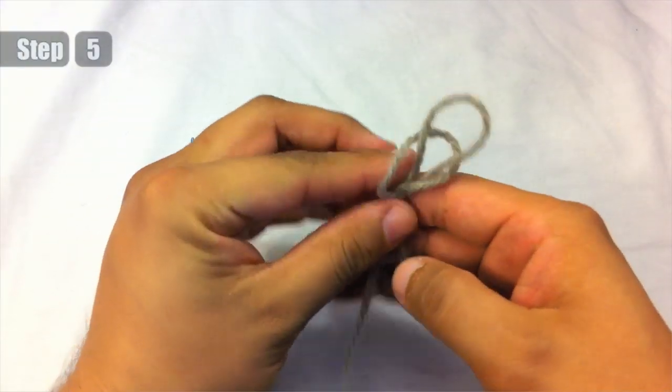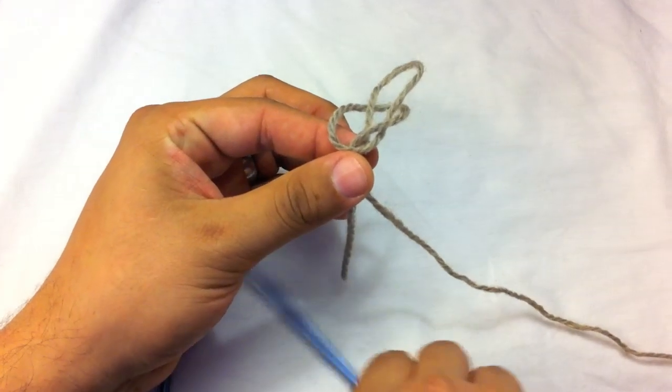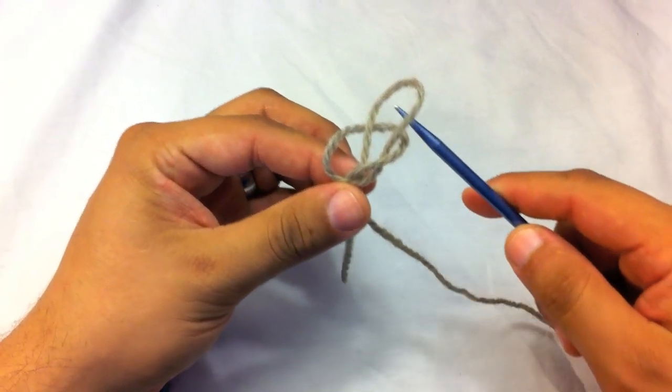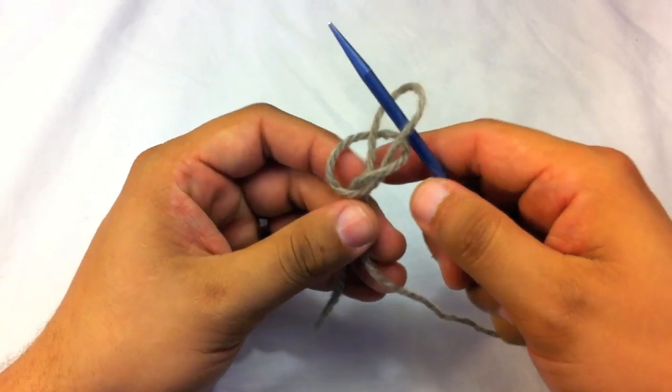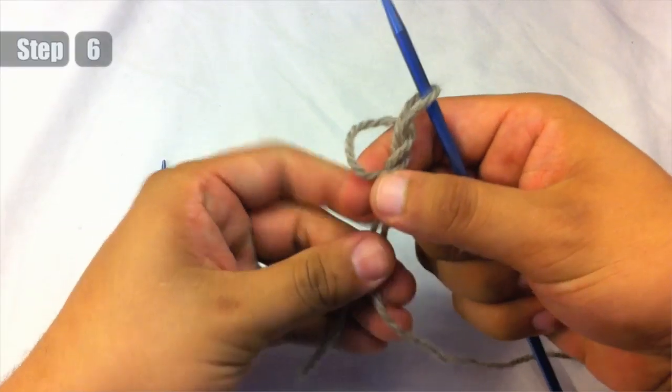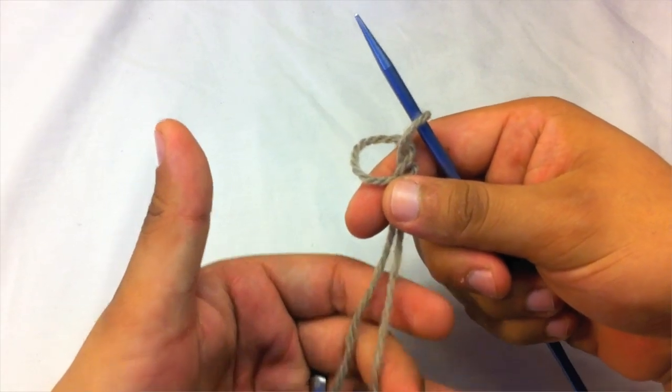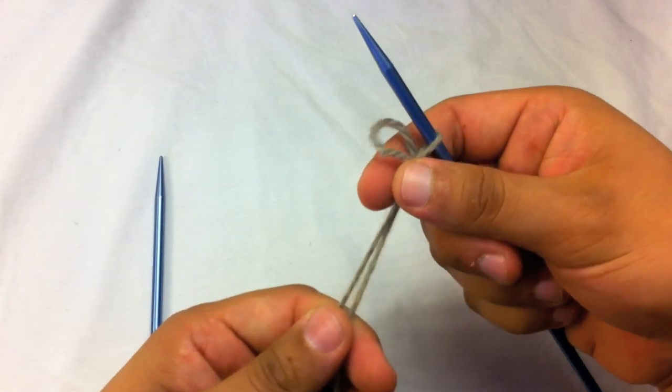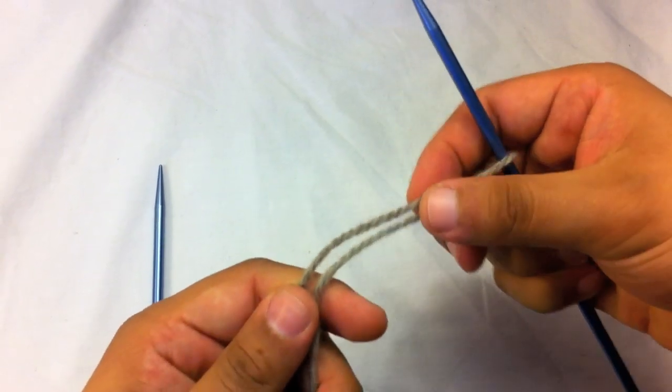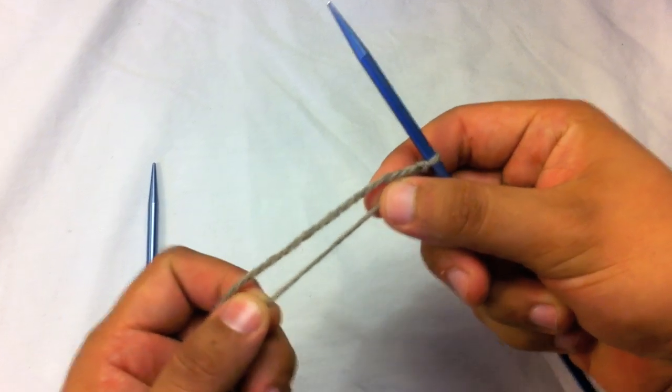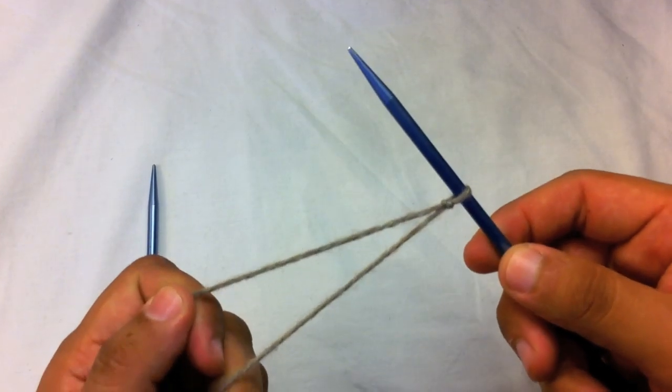Step 5. Take your knitting needle and insert the tip into the new loop. Step 6. Grab the tail and the main yarn and pull the slipknot tight onto the needle. Once your slipknot is tight you are ready to continue your cast on.